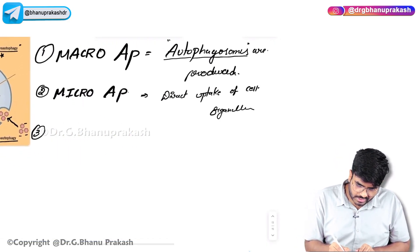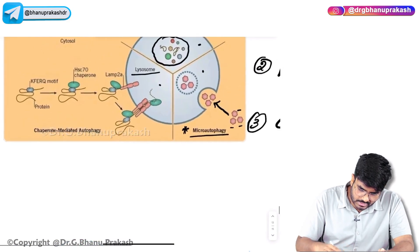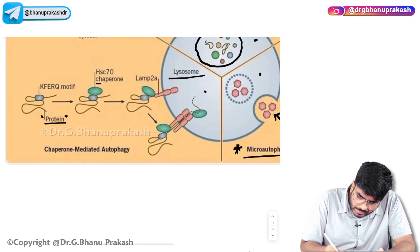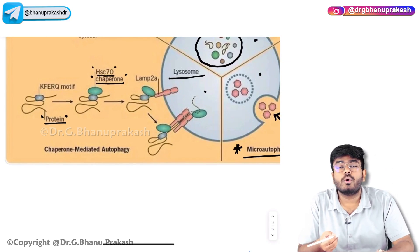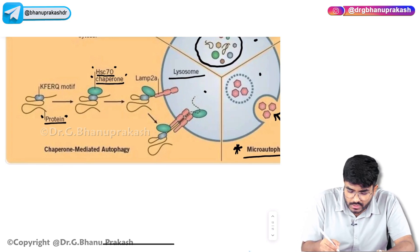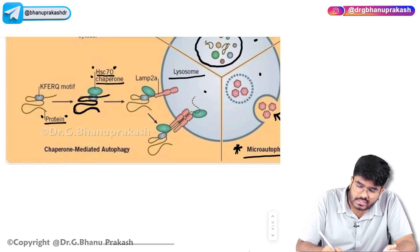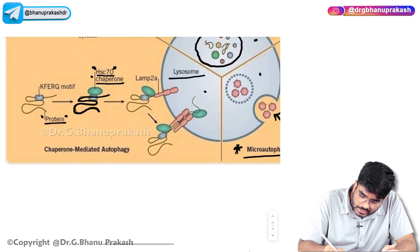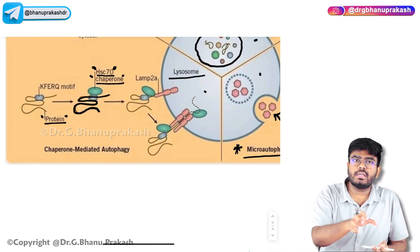What is chaperone-mediated autophagy? Here, this is a protein present in the cytoplasm. That protein will be taken up by a molecule called a chaperone — Heat Shock Protein 70, HSP70, which is a chaperone. This HSC molecule is just like a consultant — it will take this protein and direct it to the lysosomes. There is no formation of an autophagosome; these proteins are directed directly to the lysosomes.